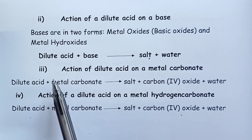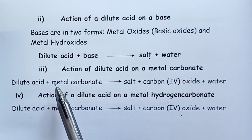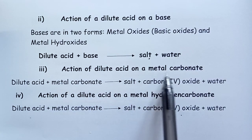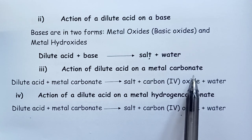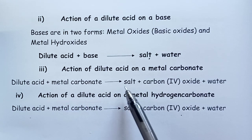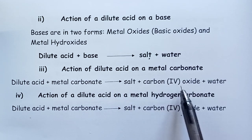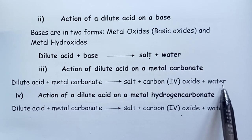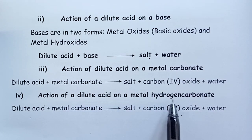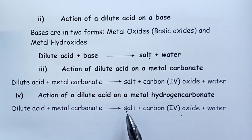The third method for preparation of soluble salts is the action of dilute acid on a metal carbonate. For this reaction we get three products: salt, carbon dioxide, and water. The fourth method is the action of a dilute acid on a metal hydrogen carbonate, which again gives similar products to reaction three — salt, carbon dioxide, and water.